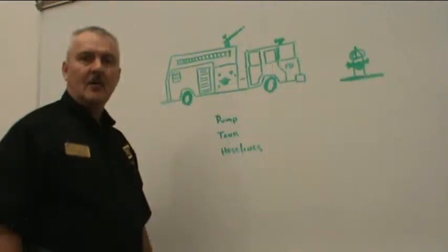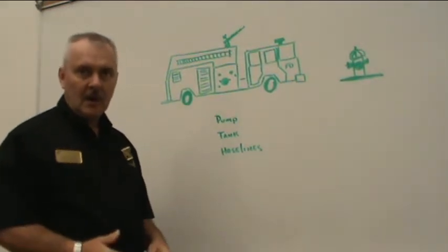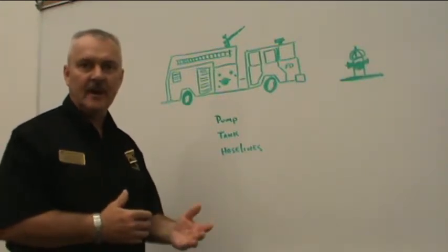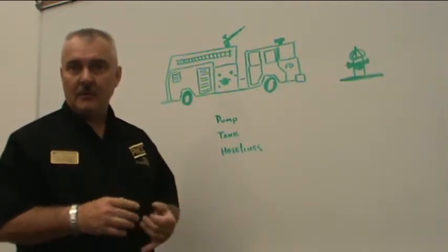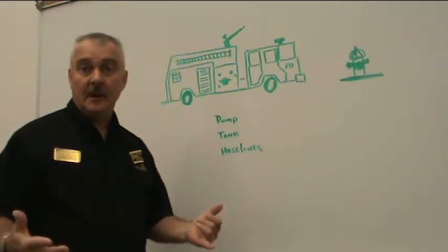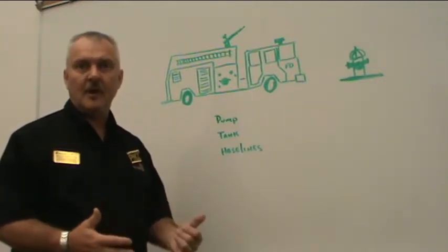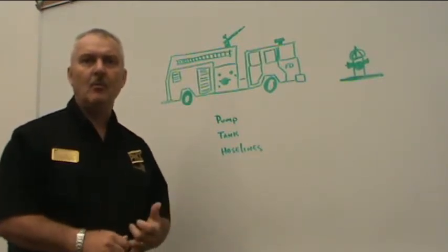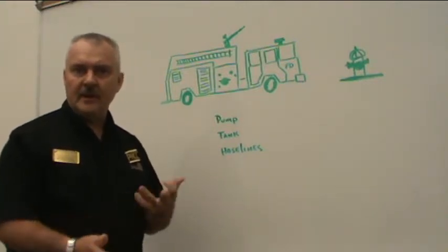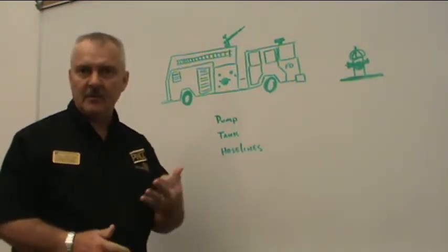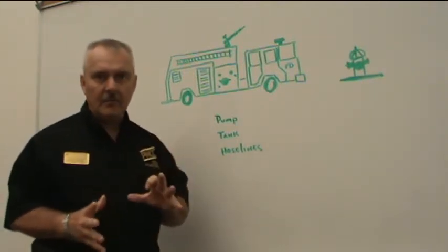Now I'm going to talk about how a computer works. A computer has a lot in common with a fire engine. In a computer, you look for three things: speed — how fast the computer processes things; capacity — how much the hard drive can hold; and connectivity — how you get information in and out to access the internet. Those three factors are important in a computer.